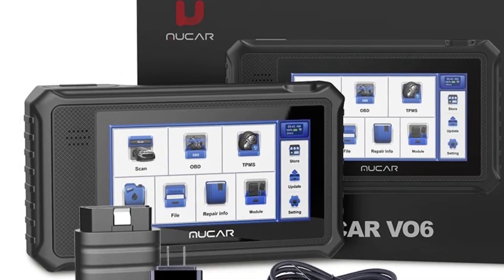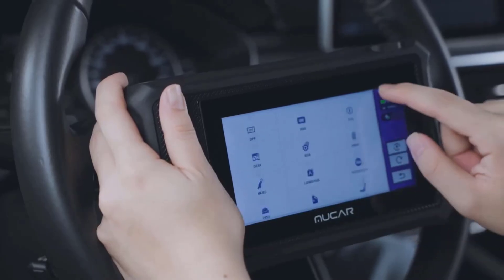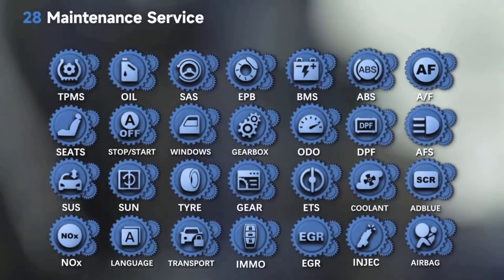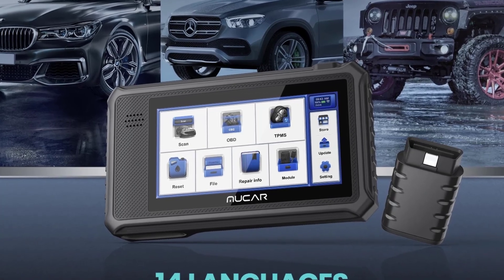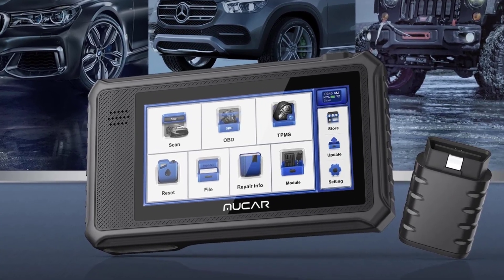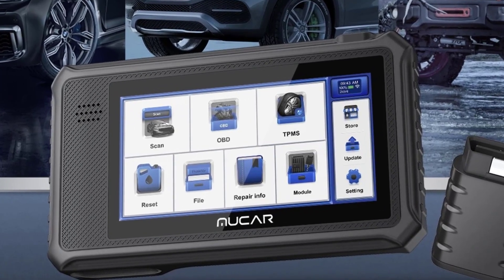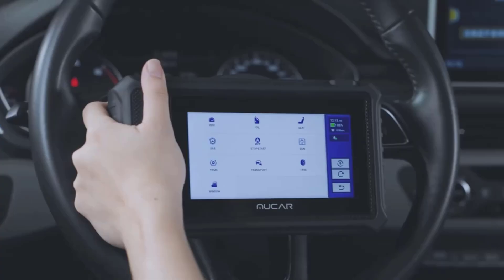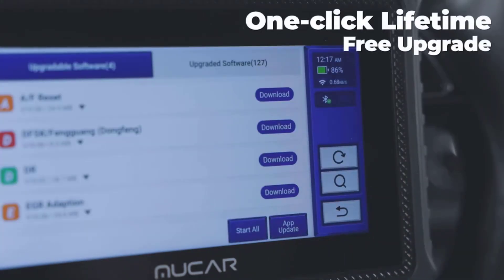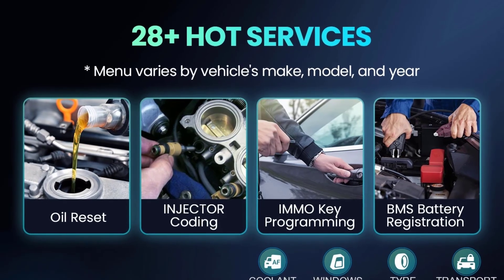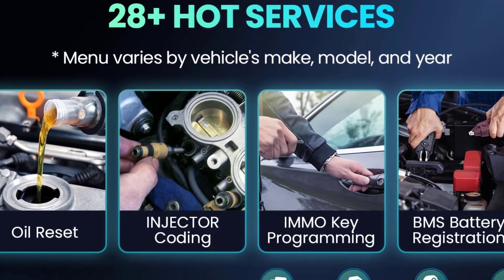It reads and clears DTCs (diagnostic trouble codes), and includes oil reset, EPB (electronic parking brake) reset, SAS (steering angle sensor) calibration, battery registration, DPF regeneration, throttle adaptation, injector coding, headlight reset, sunroof initialization, gearbox learning, and more.